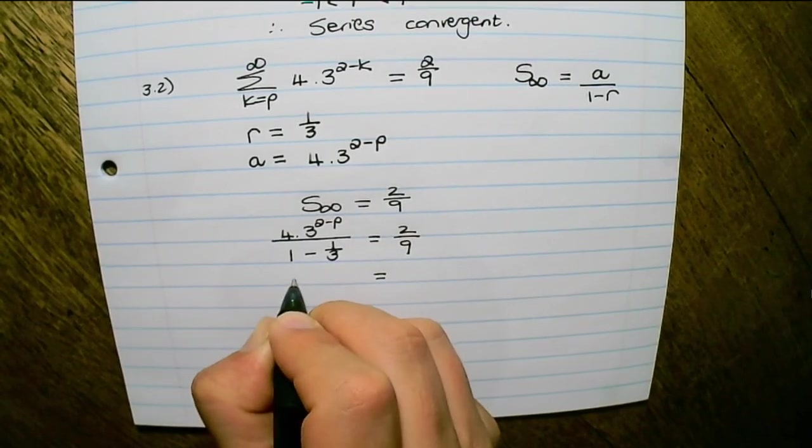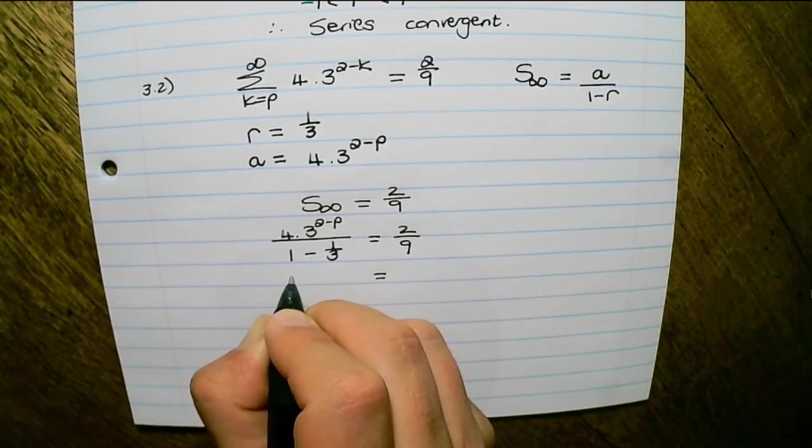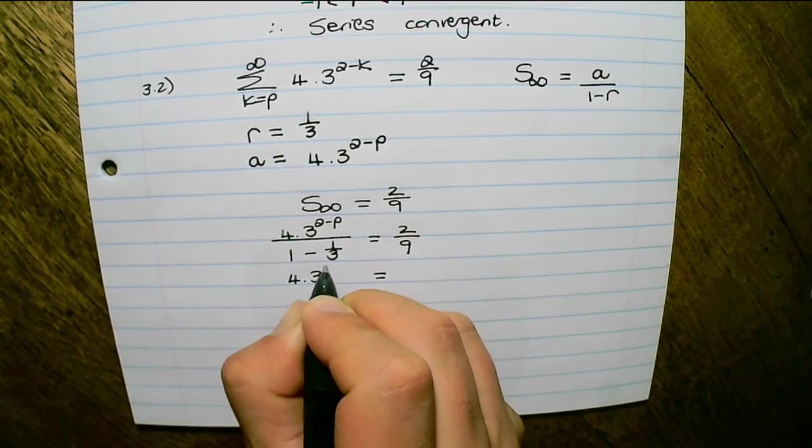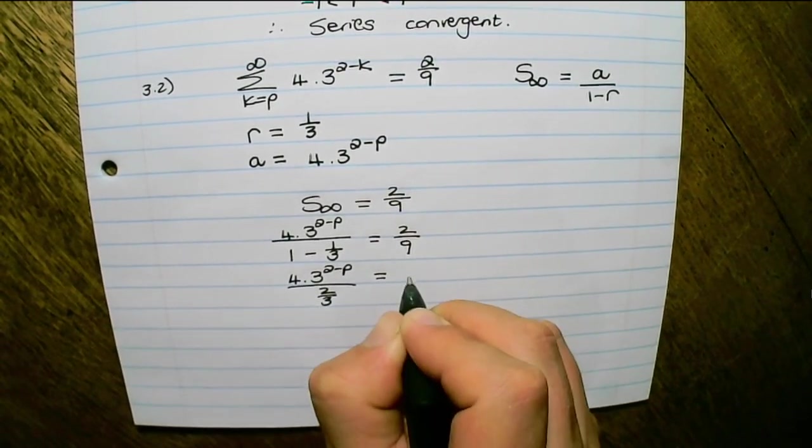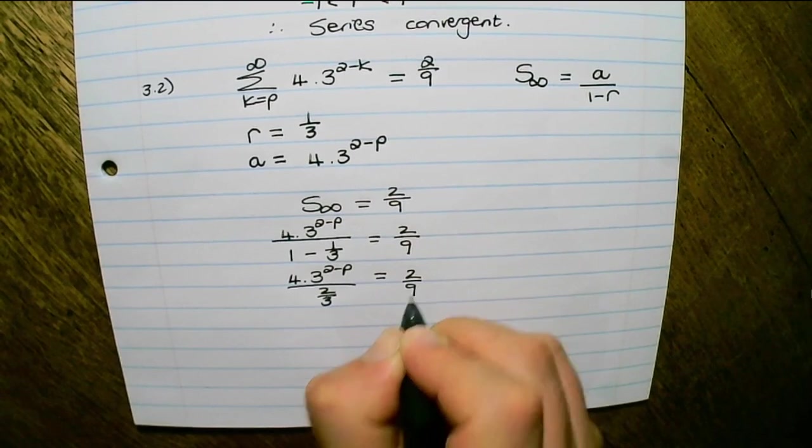And if I simplify, on the left hand side, I have 4 times 3 to the power of 2 minus p over 2 thirds, which equals 2 over 9.